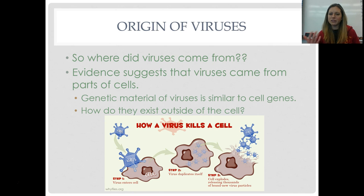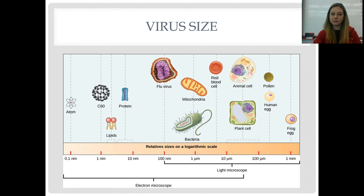Where did these viruses come from? Evidence suggests they actually came from broken parts of cells that just started existing on their own. The genetic material inside of viruses is very similar to the genetic material inside of cells. We're not entirely sure how they started existing outside of the cell, but we know they use a host cell to reproduce.